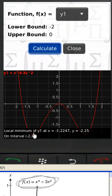And I notice that it does find a minimum right here where we thought there should be one. At x equals negative 1.2247 and y is negative 2.25.